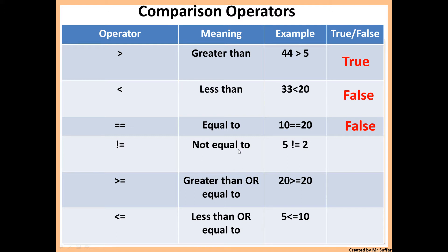Next we have the not equal to, which is the opposite of the equal to. Not equal to just means that two things are not the same — if they're not the same then it's true. For example, 5 is not equal to 2 — that's true because 5 is not the same as 2. If I said Charlie is not equal to Ava, that would be true because Charlie is not the same as Ava; they're two different names.